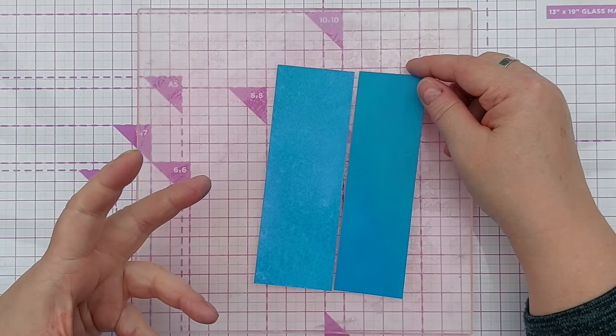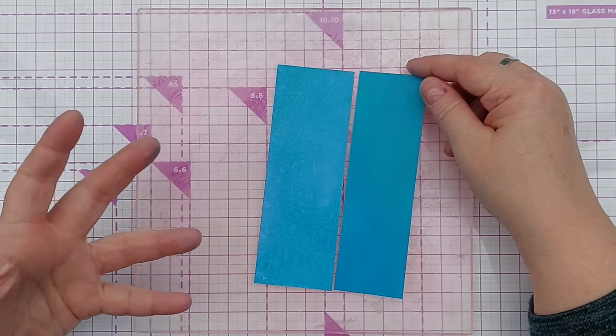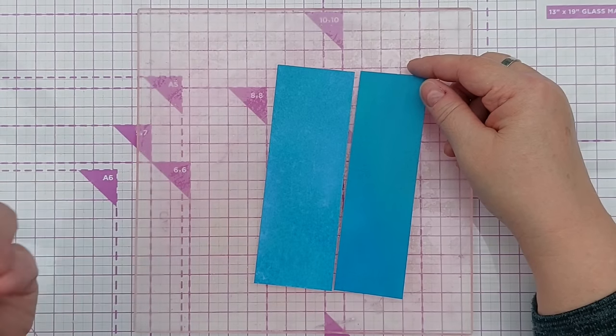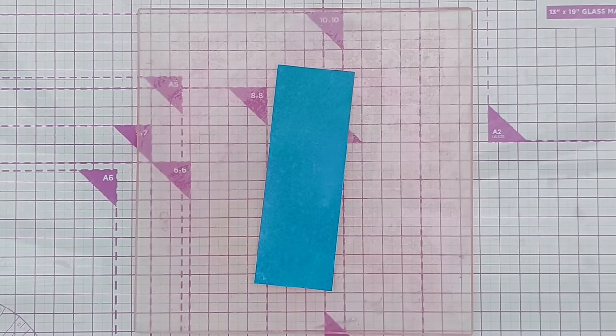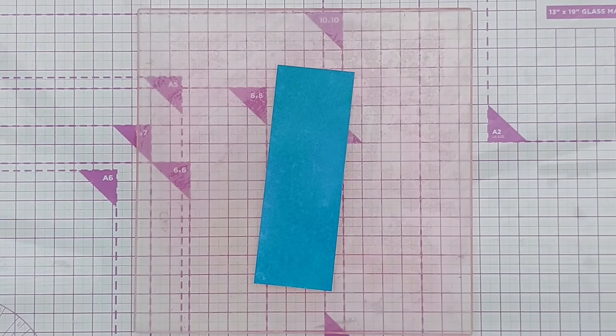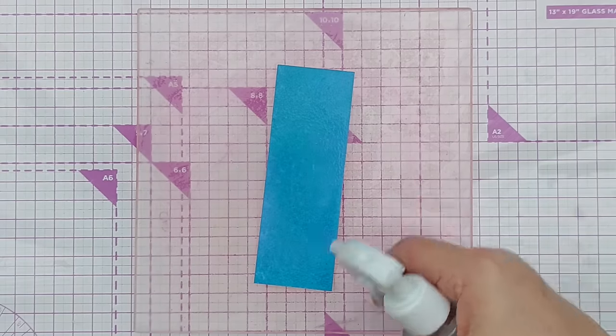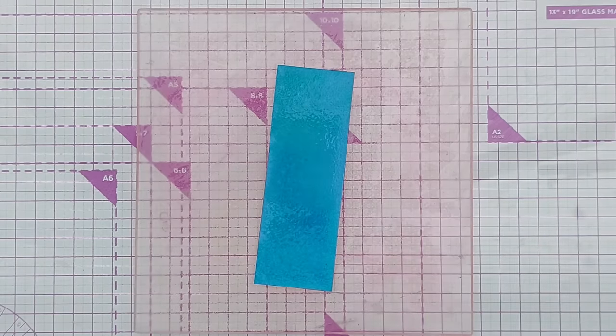So if you've got water reactive inks you can lift some of the colour to tone down that background by spritzing it with water and soaking it up with a paper towel. I'm going to do that for a second time to see if we can tone it down any further.